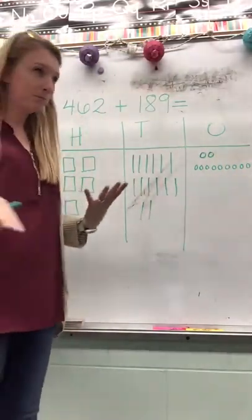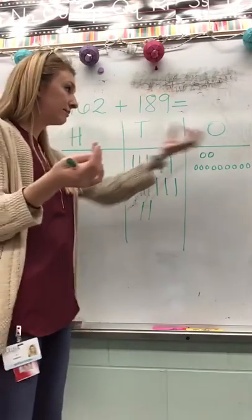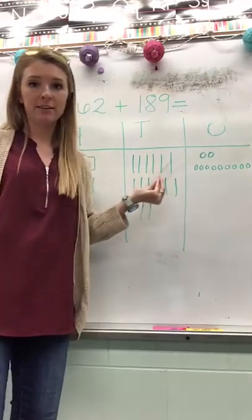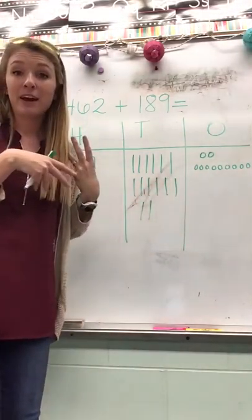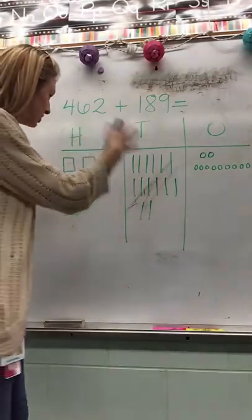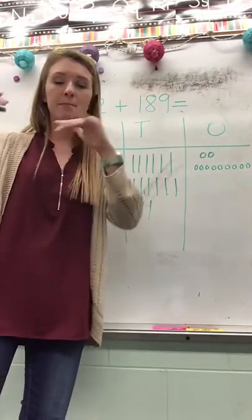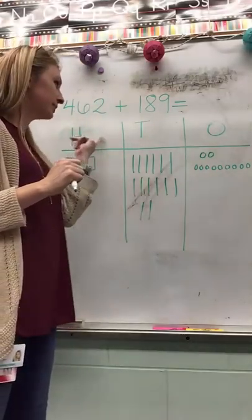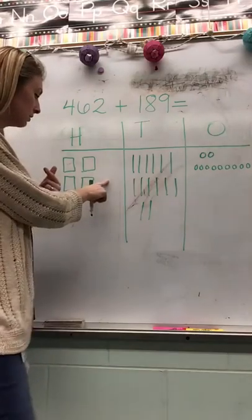Now we're gonna start regrouping. In order to regroup, we need ten of something. So if I have ten ones, I can turn it into a ten. If I have ten tens, I can turn it into a hundred. Same thing, if I have ten hundreds I can eventually turn it into a thousand in third grade, fourth grade, up in the higher levels. But right now we're focusing on hundreds, tens, and ones up to one thousand.